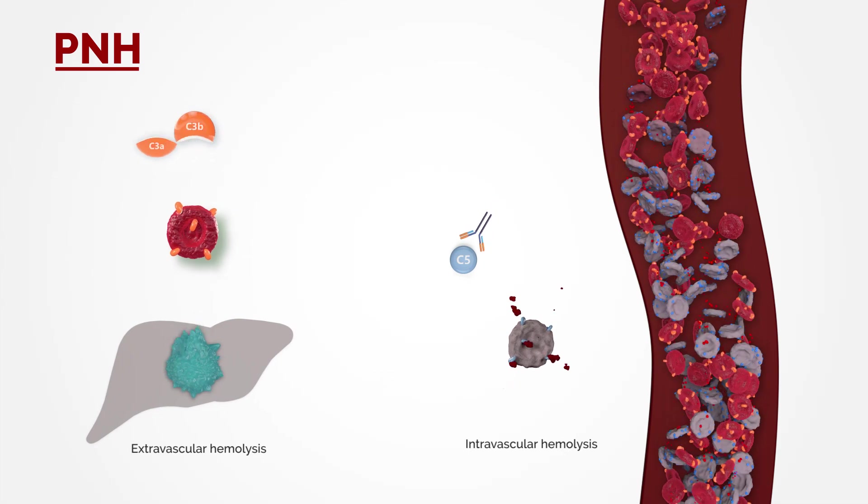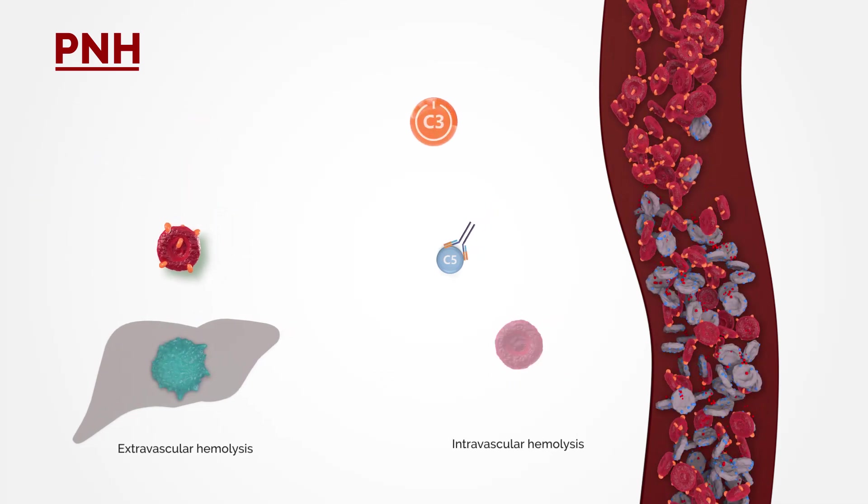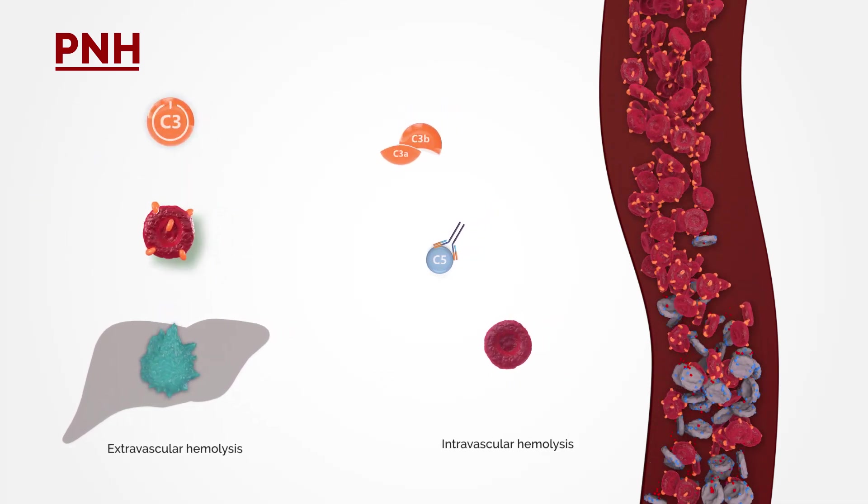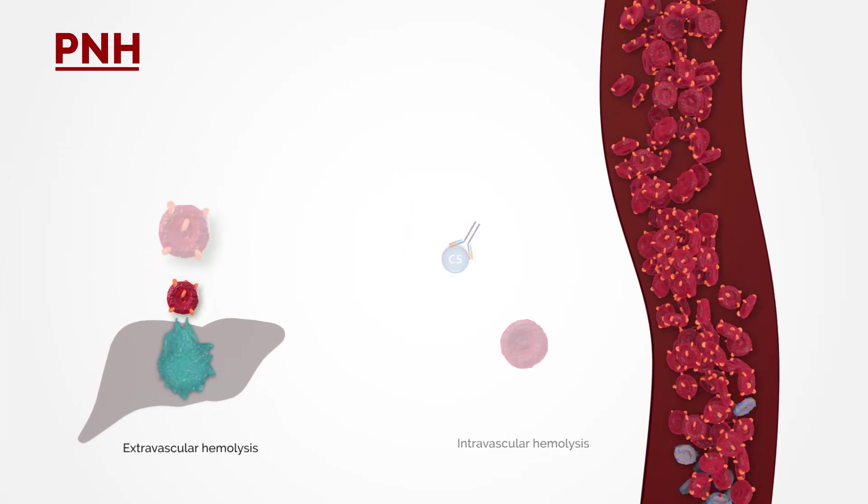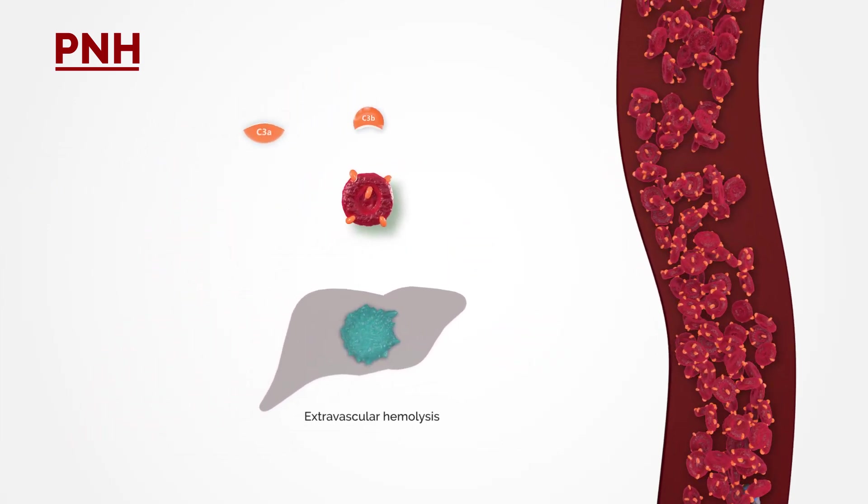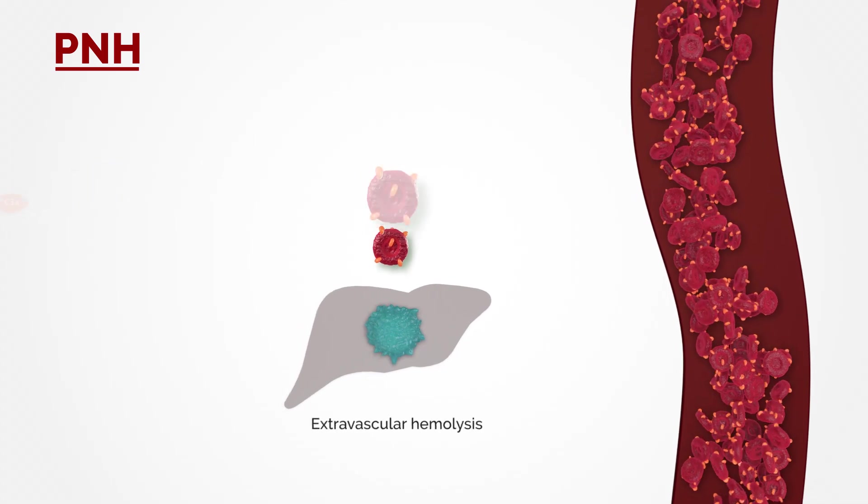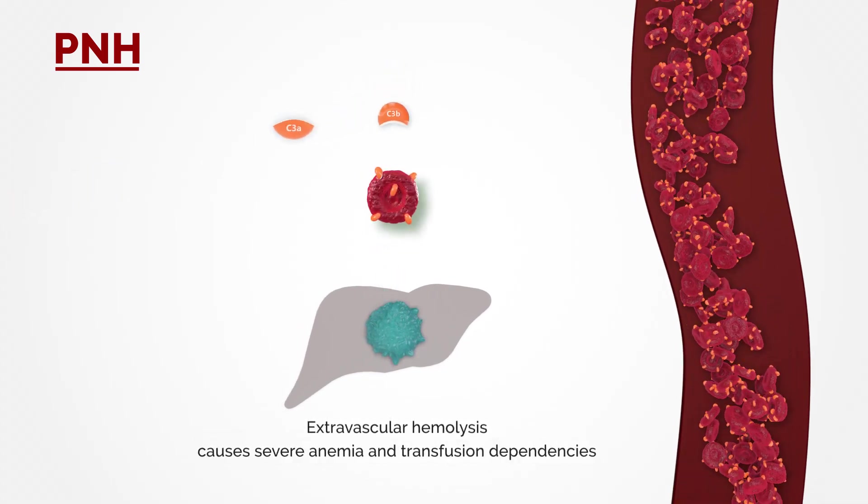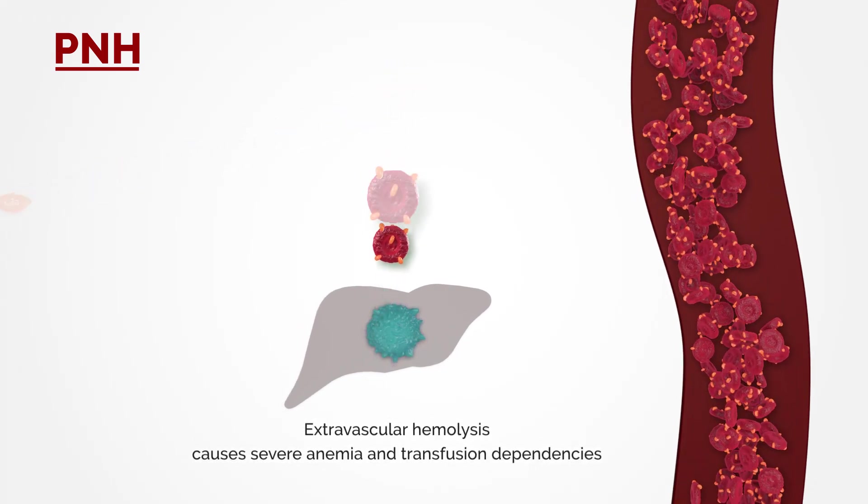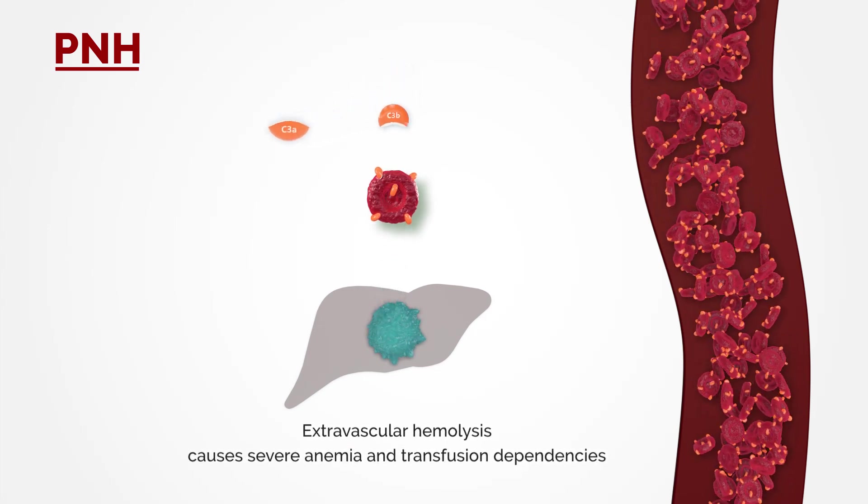Current treatment blocks the complement protein C5, which prevents MAC forming holes on red blood cells inside blood vessels. However, this does not act upon C3-related extravascular hemolysis, which continues to cause severe anemia and transfusion dependency in many PNH patients.